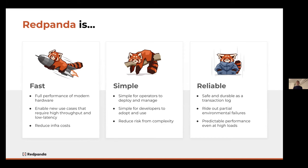At its core, Red Panda is essentially a distributed, durable, fault-tolerant transaction log. Red Panda uses the Raft consensus algorithm to replicate data between all servers in a Red Panda cluster. It uses Raft for everything — not only data replication, but also replication of state and metadata, and it's used for failure recovery. The Raft algorithm provides things like leader election: if a server in the Red Panda cluster fails, Raft will automatically re-elect leaders and Red Panda will remain operational.